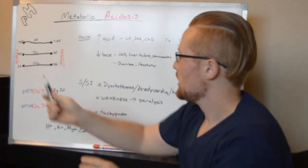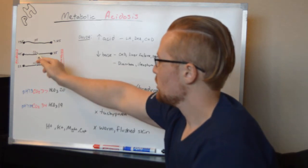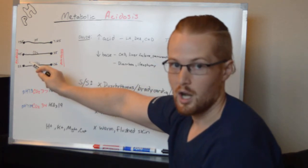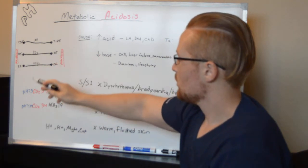The pH tells us the acidity or alkalinity of the blood. CO2 tells us if it's a respiratory cause, and the bicarb tells us if it's a metabolic cause.